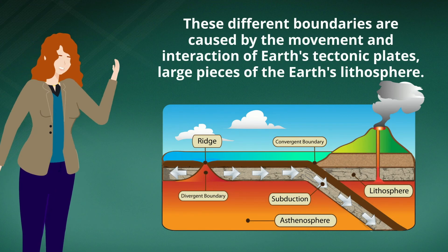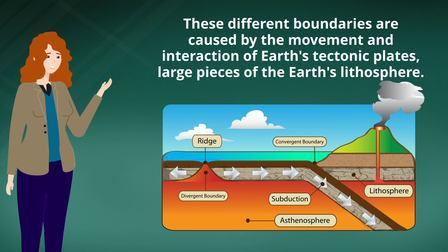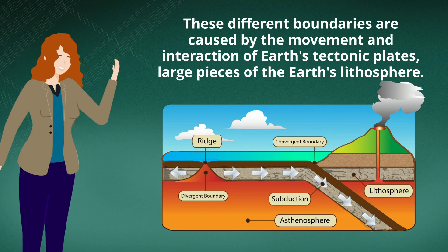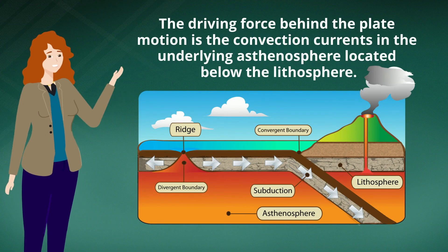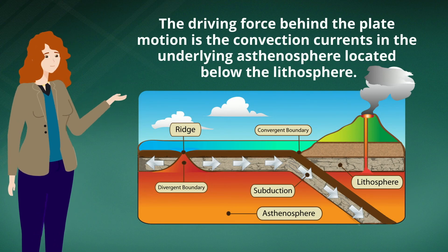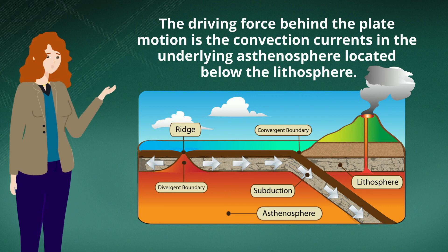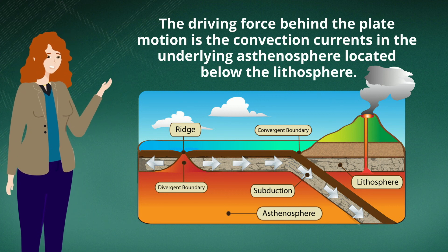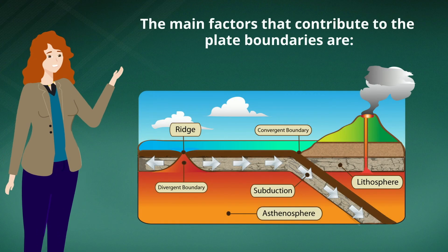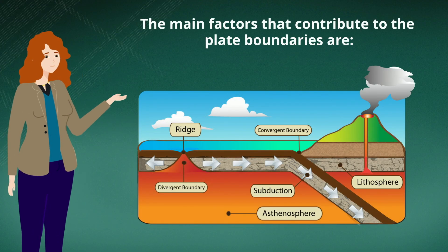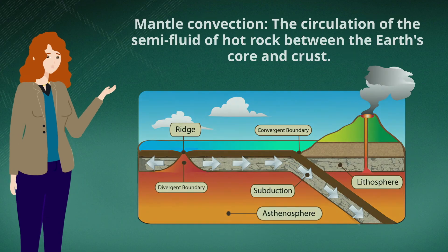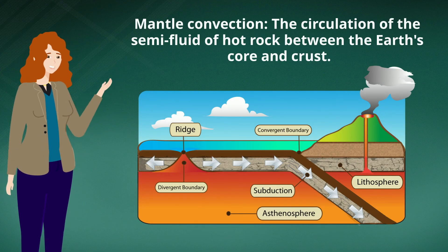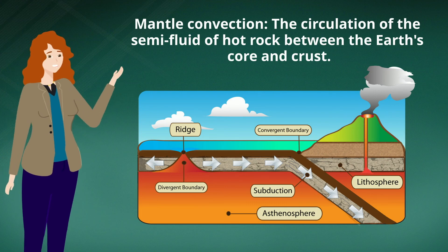These different boundaries are caused by the movement and interaction of Earth's tectonic plates, large pieces of the Earth's lithosphere. The driving force behind plate motion is the convection currents in the underlying asthenosphere, located below the lithosphere. The main factors that contribute to plate boundaries include mantle convection, which is the circulation of semi-fluid hot rock between the Earth's core and crust.